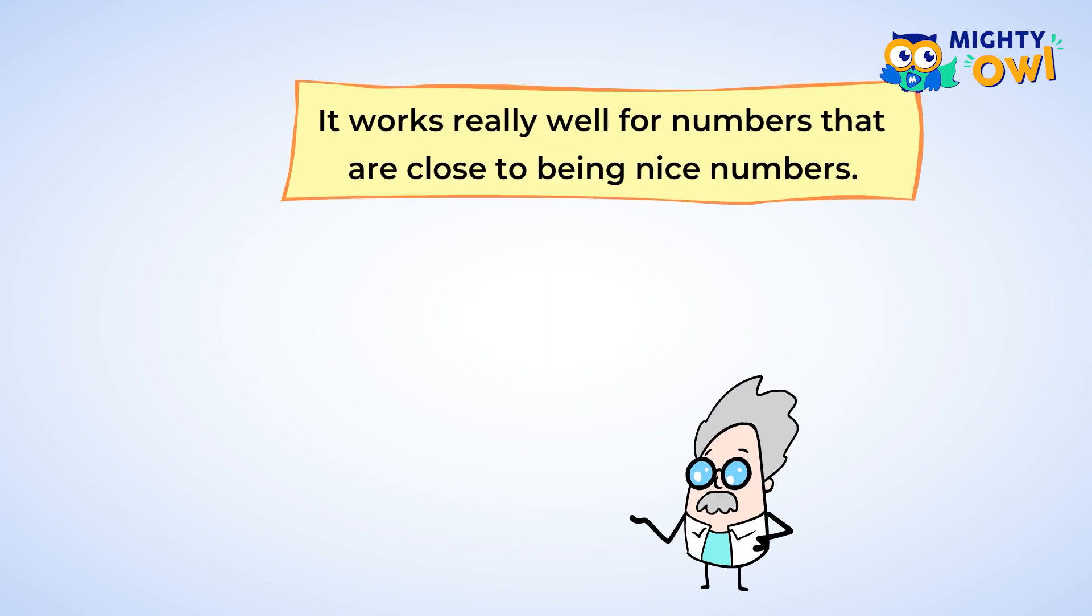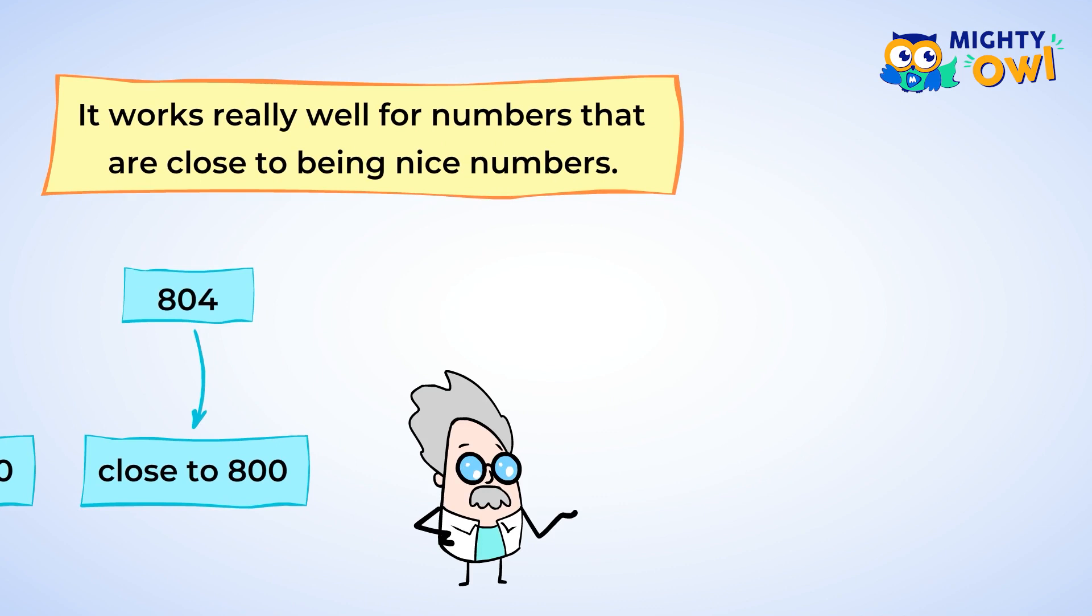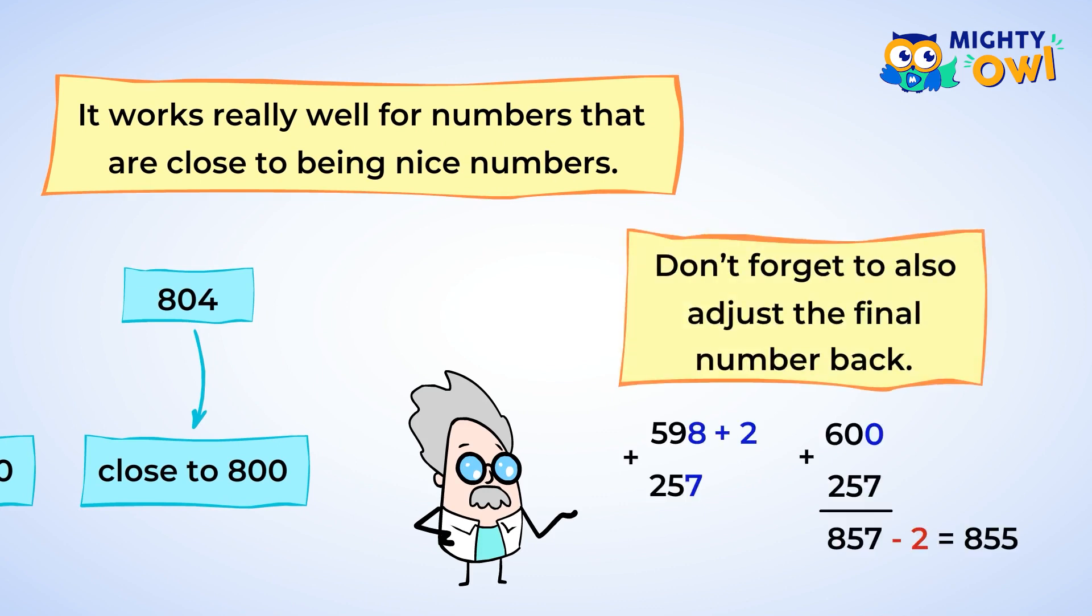This strategy works really well for numbers that are close to being nice numbers, like ninety-five, which is close to one hundred, or eight hundred and four, which is close to eight hundred. Remember, when you adjust a number to make it easier to work with, don't forget to also adjust the final number back to keep everything balanced.